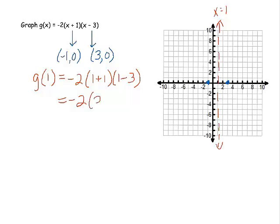Alright, let's simplify this. Looks like I'm getting positive 8. So we know that the vertex is at 1, 8. Let's put that on the graph.